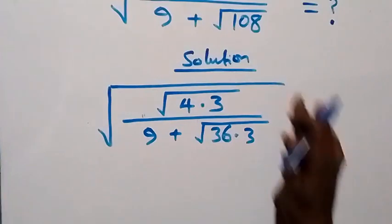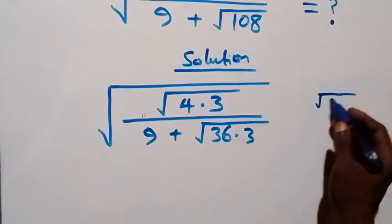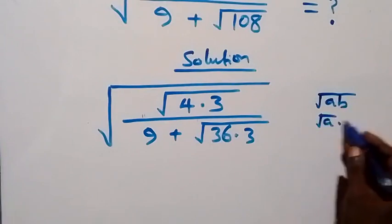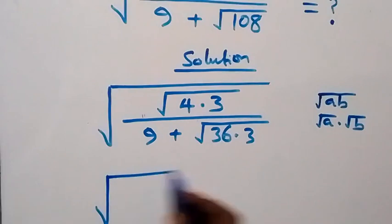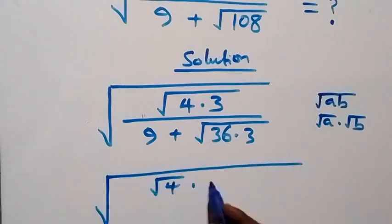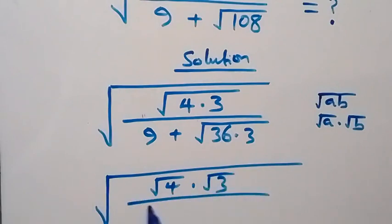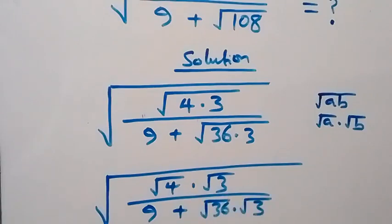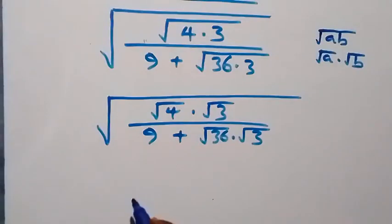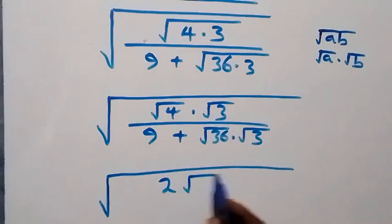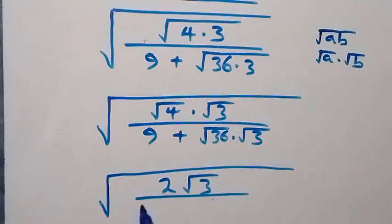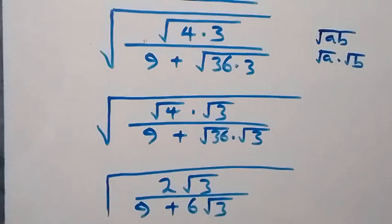Also, when we have root a times b, we can separate it as root a times root b. Then what we have here becomes square root of root 4 times root 3, divided by 9 plus root 36 times root 3. Here, root 4 is 2, so we have 2 root 3 in the numerator, divided by 9 plus 6 root 3.